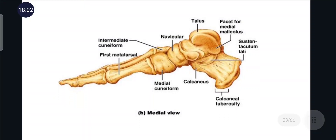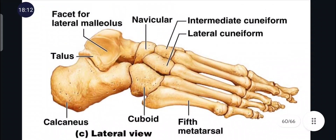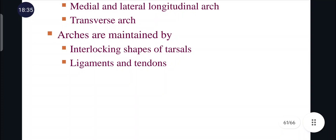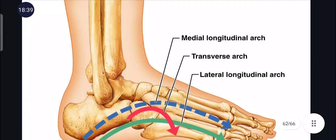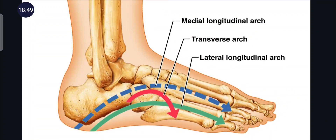The medial view shows the different foot bones — the tarsals including navicular, talus, calcaneus, cuboid, and cuneiform. The foot has three important arches: medial and lateral longitudinal arches, and a transverse arch. These arches are maintained by the interlocking shapes of the tarsals, ligaments, and tendons, increasing the capability for standing upright.